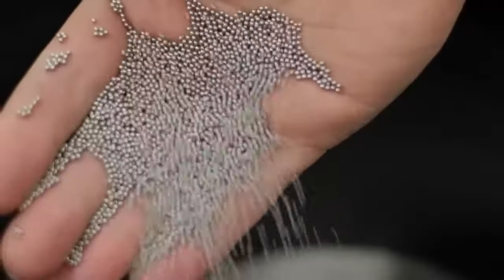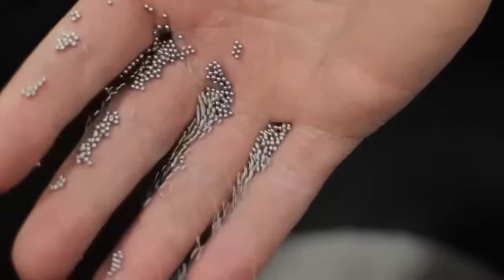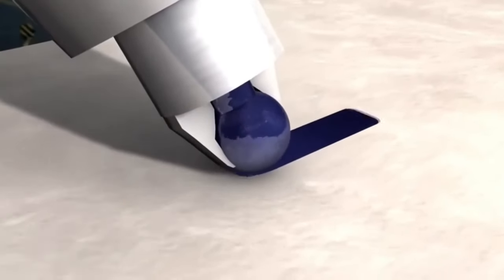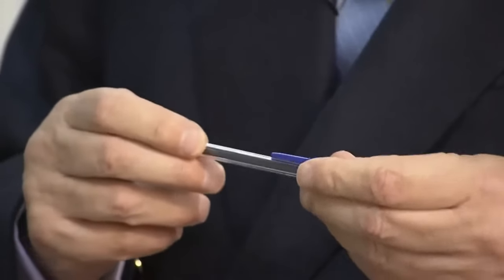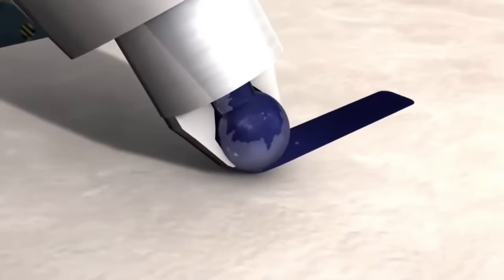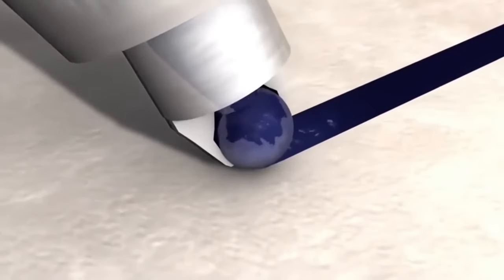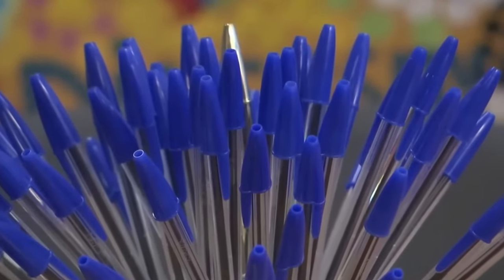The key to producing the perfect pen lies in the small metal ball at the tip. Its role is to control the flow of ink. When the pen is not in use, it seals the liquid ink inside. When writing, the ball rotates, transferring the right amount of ink to the paper.